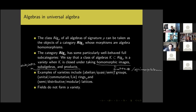Fields do not form a variety. Take your favorite field, form the direct product with itself, and you get zero divisors — so the direct product of fields is not a field. Thus fields fail to be closed under products. Rings do form a variety, though.